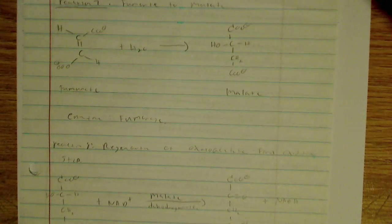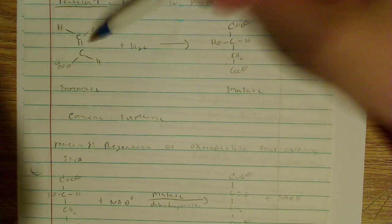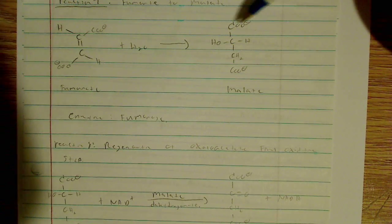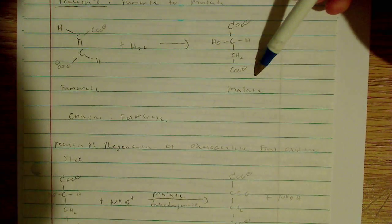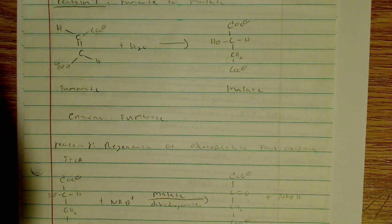And in the next reaction, which is reaction seven, I said that you're adding water. This is a hydration, so I'm adding H2O across the double bond to make, again, two single bonds, form this molecule known as malate. The enzyme is called fumarase.